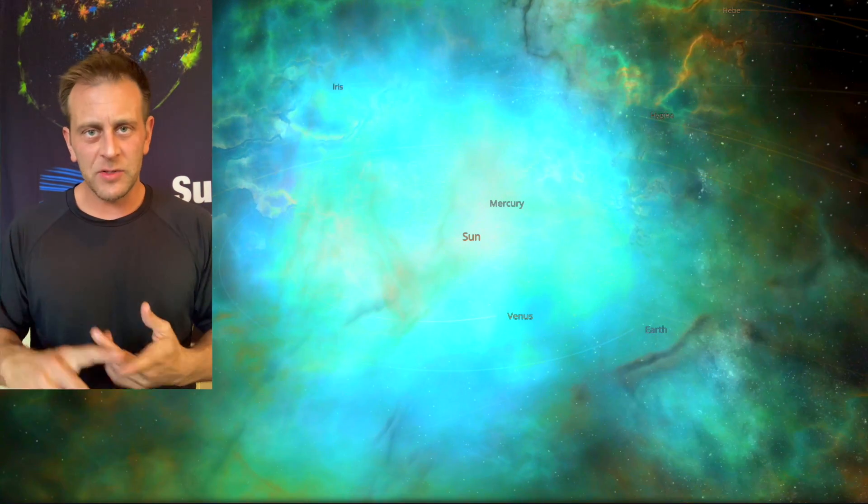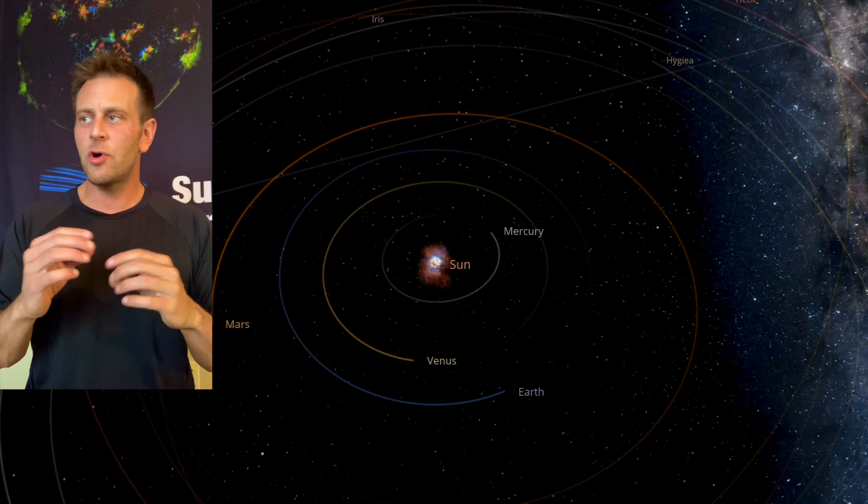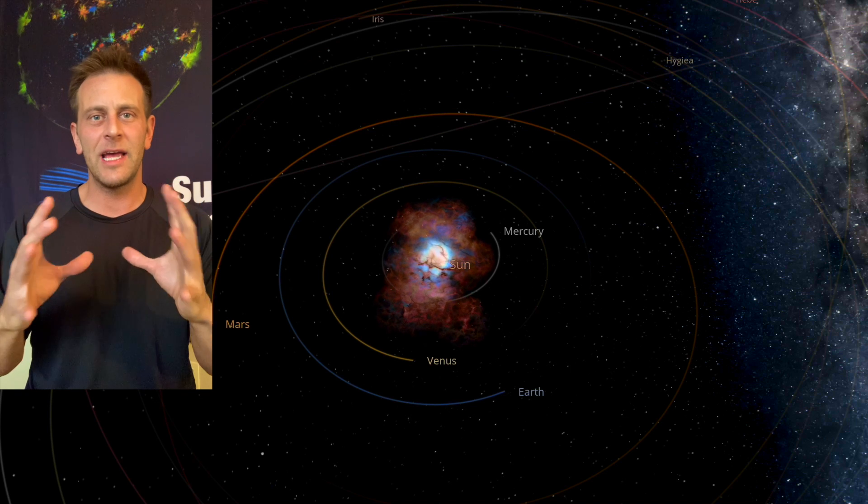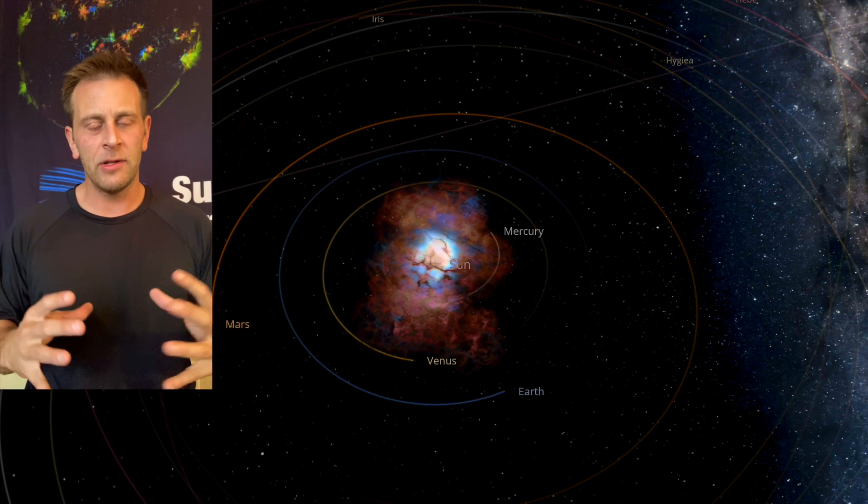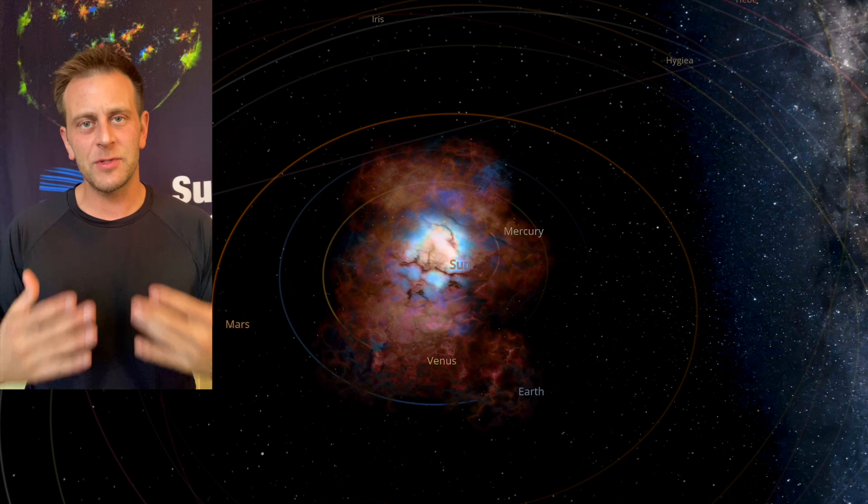If we have a lot of sunspots, if it's sunspot maximum, if there's flares, filament releases, CMEs, it's going to blast off that shell before it can actually ever become a shell. So it has to be something that happens in a deep sunspot minimum.